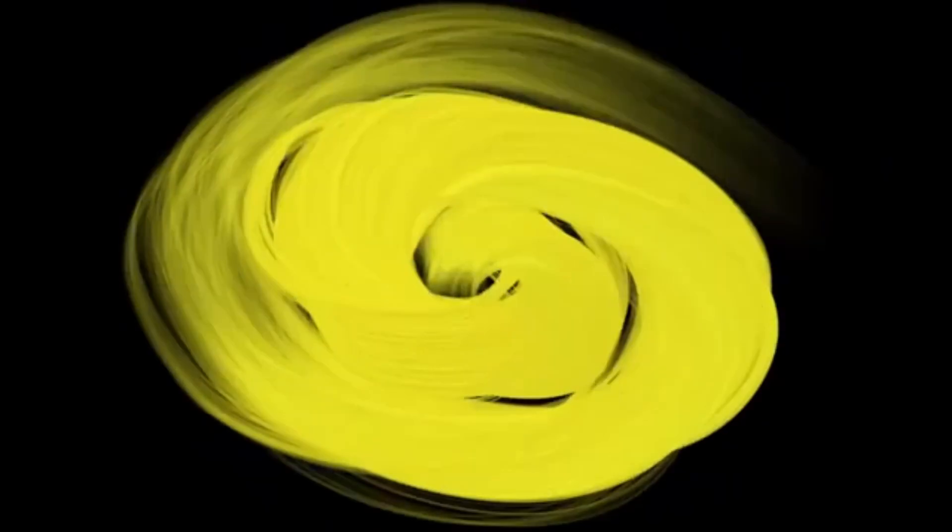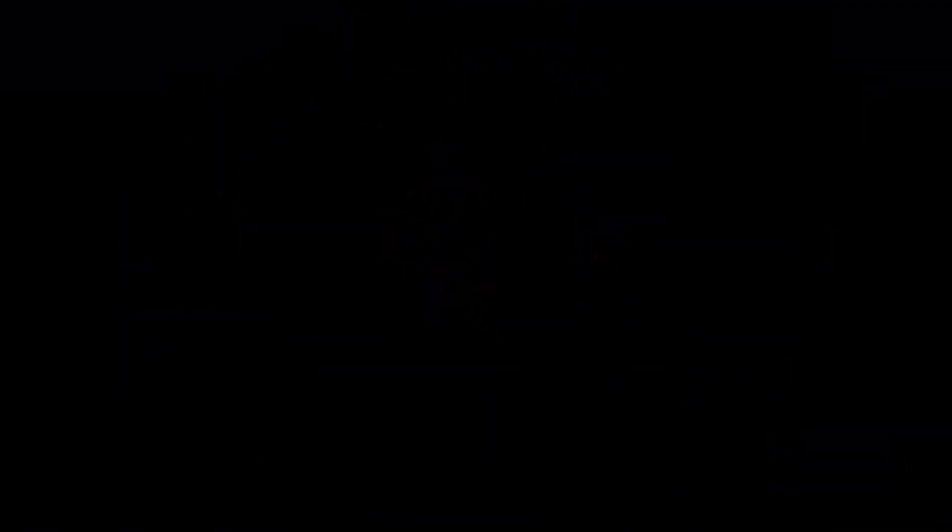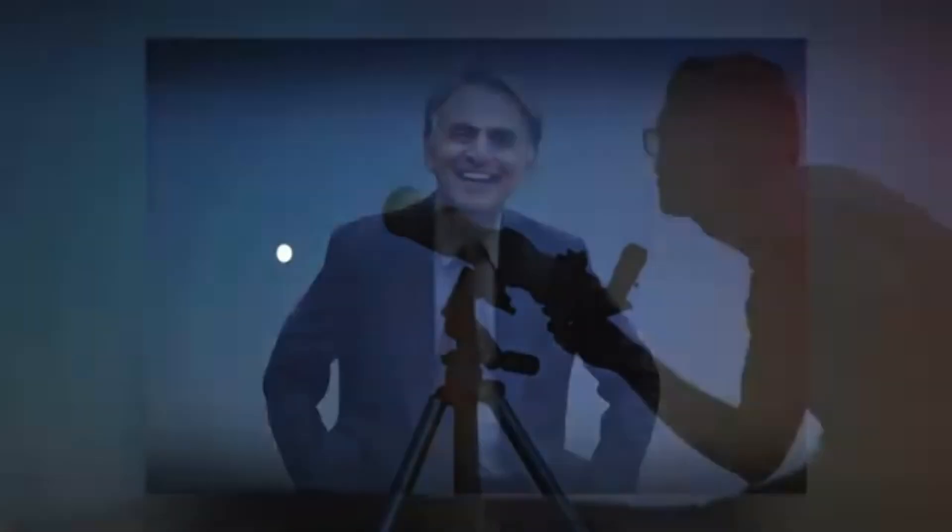Perhaps the most iconic image captured by the Voyagers was not of a faraway planet or an unknown moon, but of Earth itself. Photographed in 1990, as Voyager 1 sailed beyond the solar system, it turned its camera back toward home and captured the pale blue dot, a photograph that would forever redefine our place in the universe.